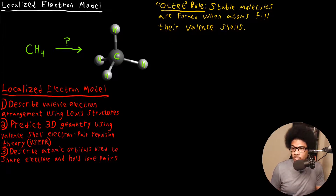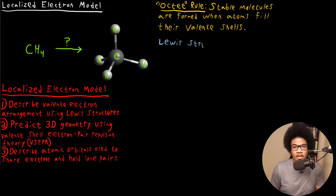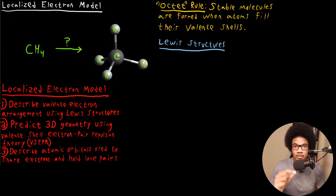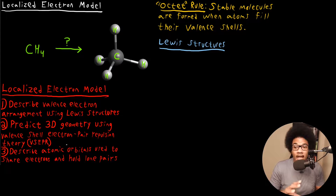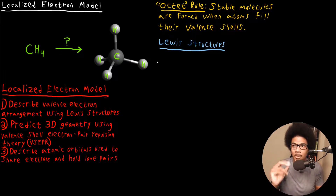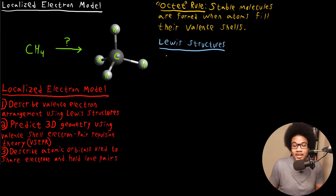Let's look at Lewis structures in general — what they are, what they look like, and what the different components are. Lewis structures are very important because you can't predict the three-dimensional geometry if you don't know the Lewis structure. You won't be able to describe how the atomic orbitals change if you don't know the Lewis structure either. The Lewis structure really is the bedrock of the localized electron model.